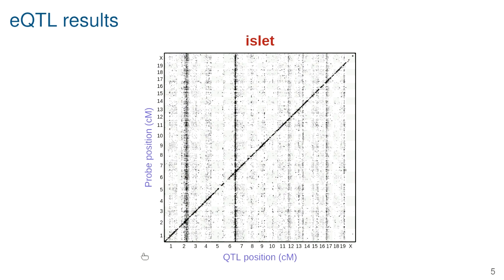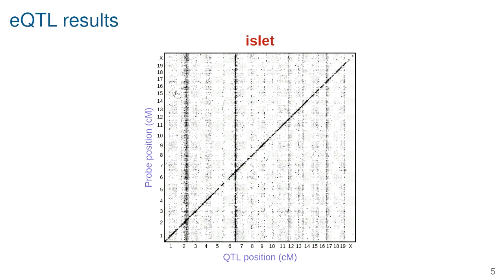We do that for each of the 30,000 genes. The plot shows on the y-axis the position of the gene being studied and on the x-axis the position of the QTL. Each dot says a gene at that location on, say, chromosome 2 has its mRNA level associated with genotype at that position on chromosome 5. So for each of 30,000 genes we did a genome scan to find regions where that gene's expression is associated with genotype.